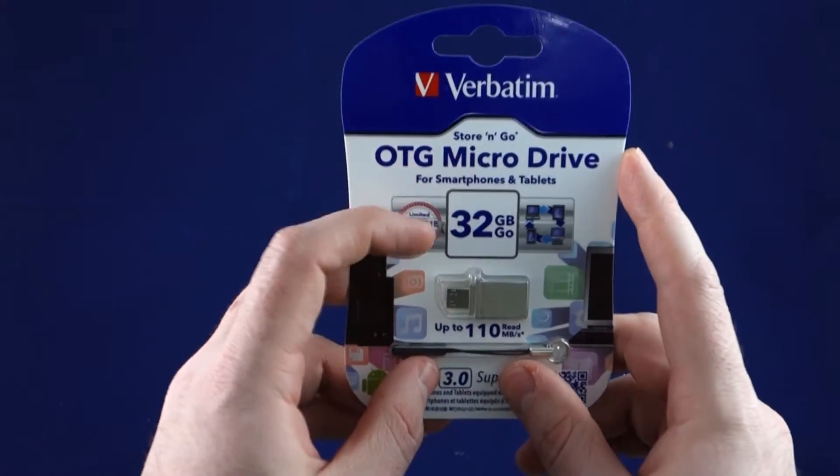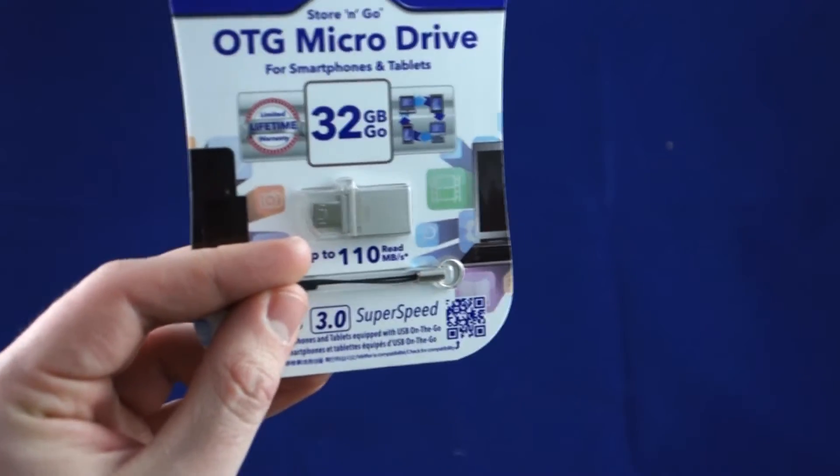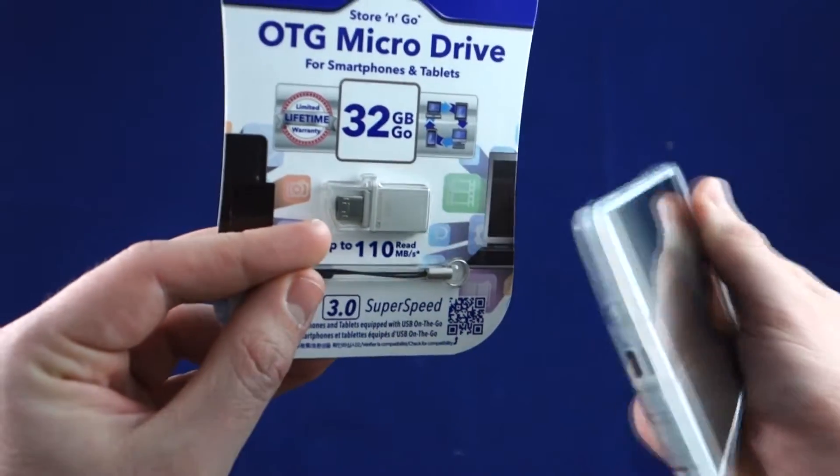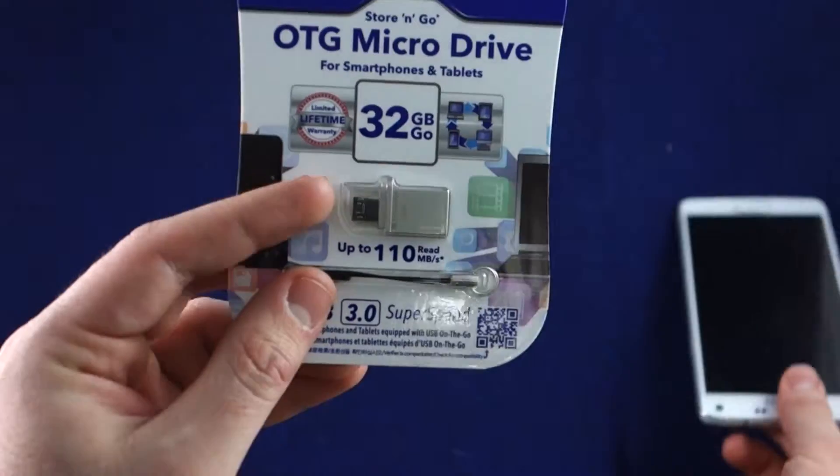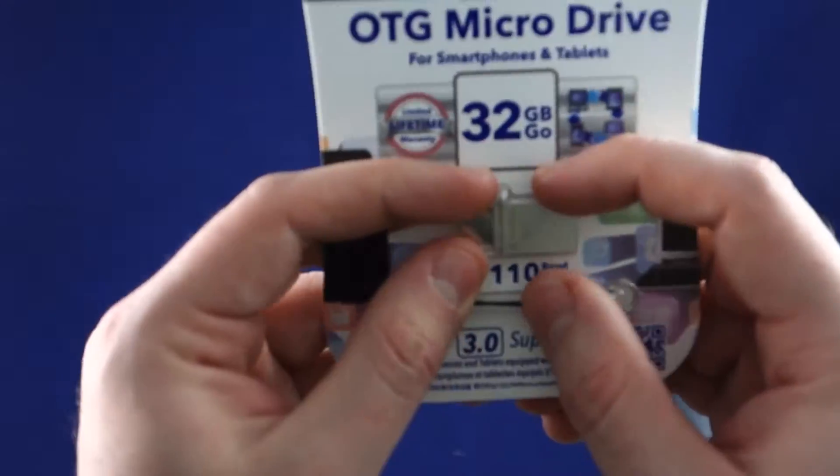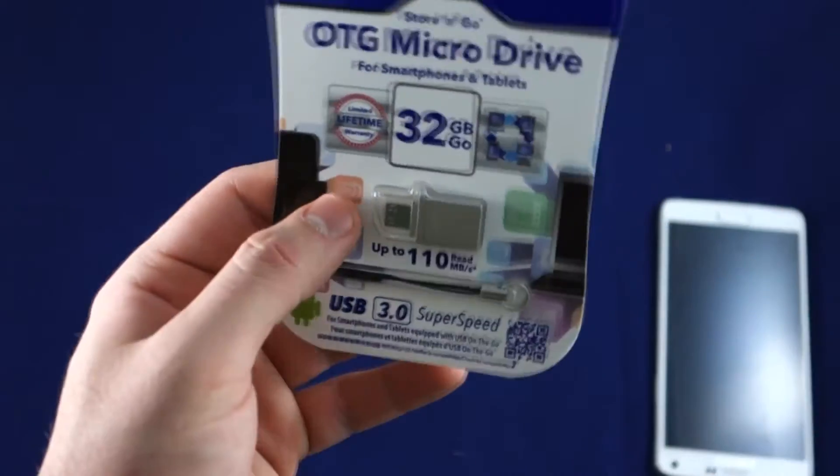What an OTG micro drive is, is pretty much a drive that connects to your phone, usually a Samsung, HTC, pretty much Androids that accept USB 2.0 or mini USB. And the other side is an actual USB port to connect it to the computer.